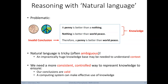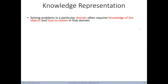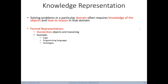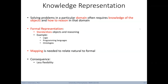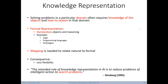To get around natural language ambiguity, we need a more consistent and controlled way to represent knowledge, ensuring our conclusions are valid and a computing system can make effective use of knowledge. To solve problems in a particular domain, we often require knowledge of objects and how to reason with them. Therefore it makes sense to use a formal representation, which standardizes objects and reasoning. Examples of formal representations include logic, programming languages, and ontologies. A mapping may be required to connect natural language to a formal representation, though a consequence of formal representation is that it can be less flexible. As Ginsberg noted in 1993: 'The intended role of knowledge representation in AI is to reduce problems of intelligent action just to search problems.'